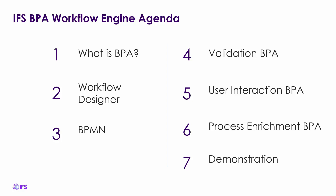A brief agenda: I'll go through a description of what is business process automation, talk about our new workflow designer, and discuss business process modeling notation. Then I'll go through some examples of the three different types of business process automations — validation, user interaction, and process enrichment — and then we'll do a demonstration of one of these.